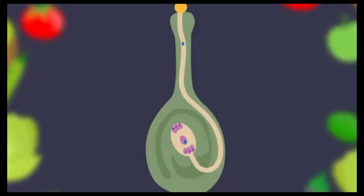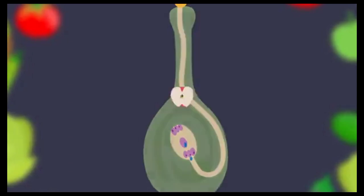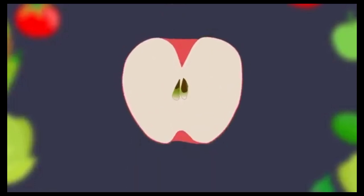One male sex cell fuses with the female egg, fertilizing it — this develops into the seed. The other male sex cell attaches to two cells in the embryo sac, forming an endosperm, which provides the starchy food for the seed to grow.